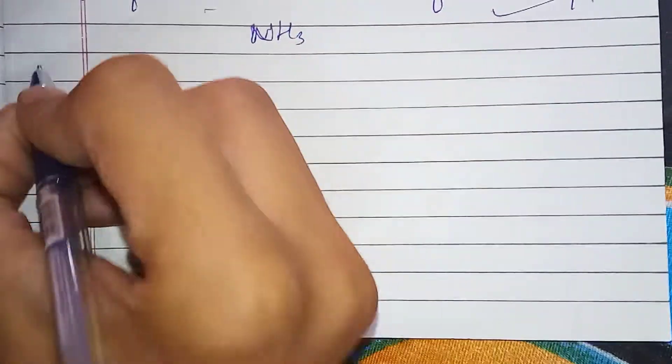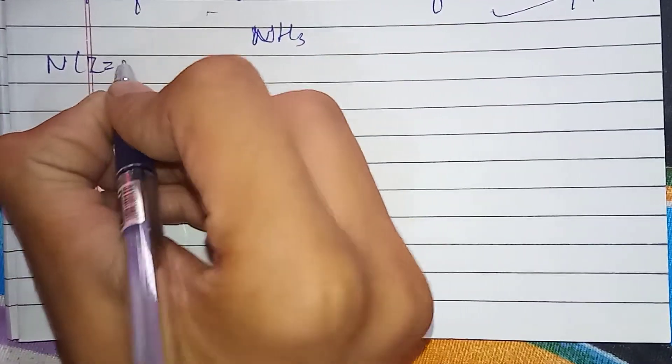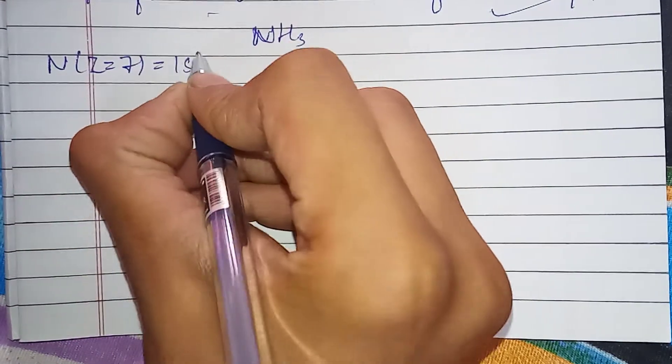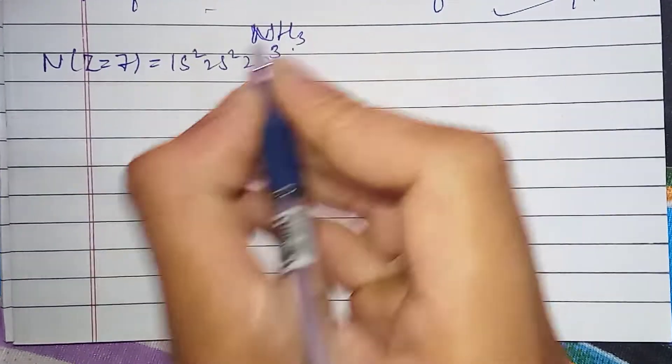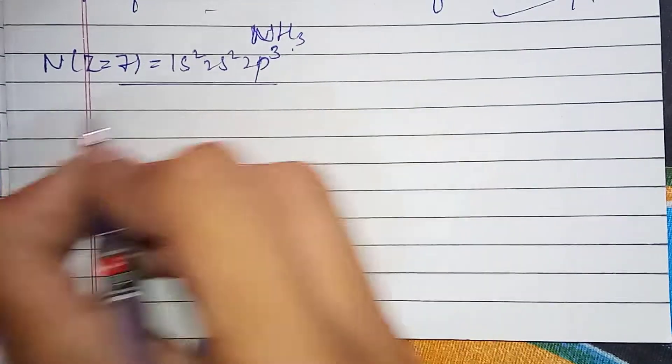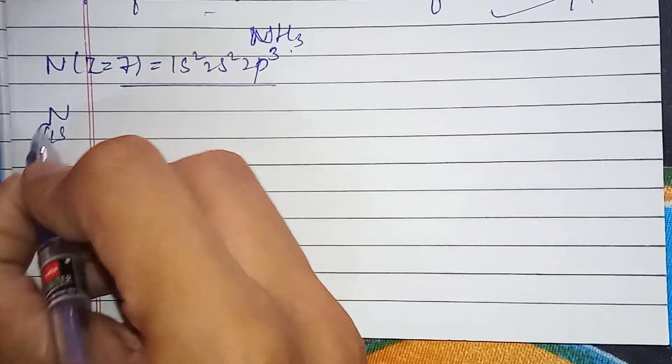First, nitrogen's atomic number is 7, with electron configuration 1s2, 2s2, 2p3. This is nitrogen in the ground state.